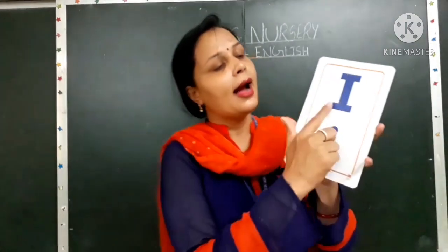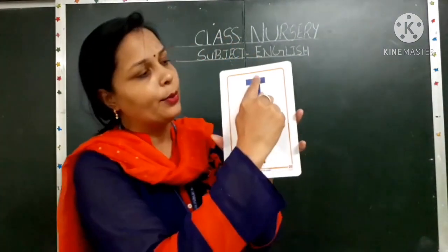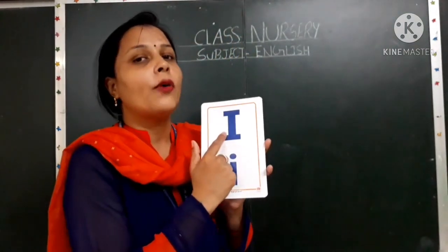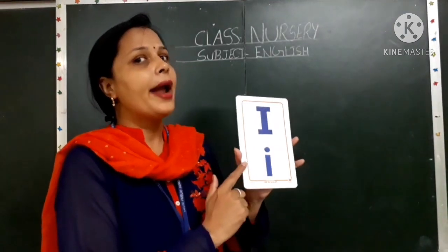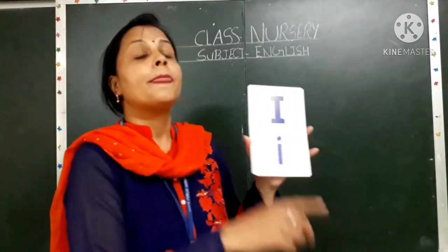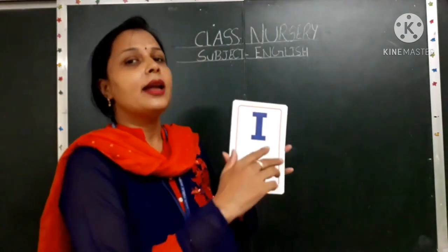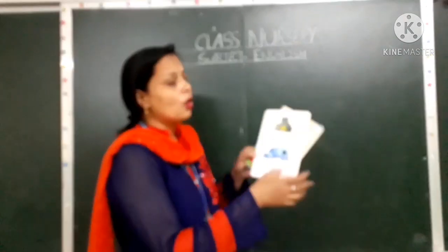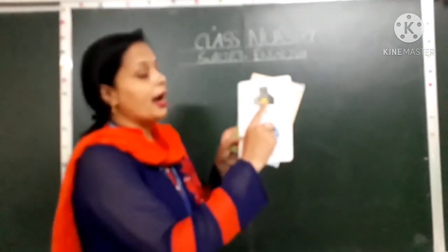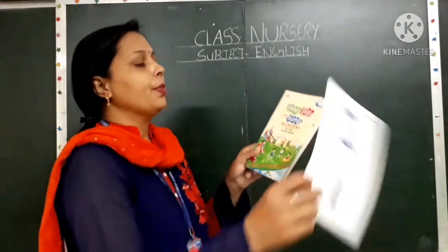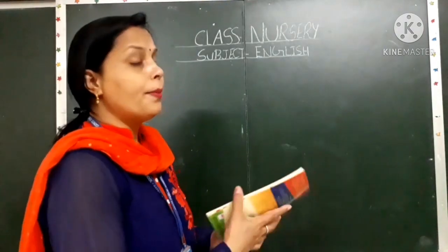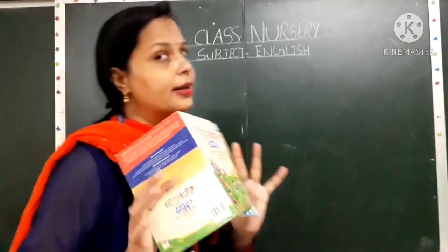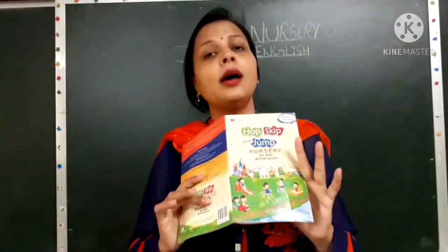This is letter I. Isko kya bolte hain? I. And the sound of I is 'i'. I — ice cream, your favorite. I — import also. I — igloo. I have shown you many pictures. Now open your English alphabet book. This is your English alphabet book, yes?